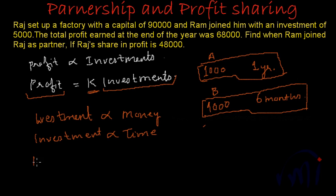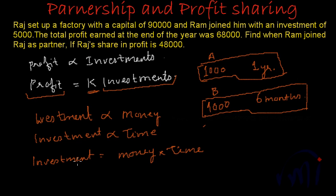From here, investment will be equal to money multiplied by time. This is how we calculate the investment done by a person. If a person has invested more money, his investment value will increase, and if he has invested for more time, then also his investment value will increase. So if I multiply money by time and call this investment, we will get the correct result for profit share.